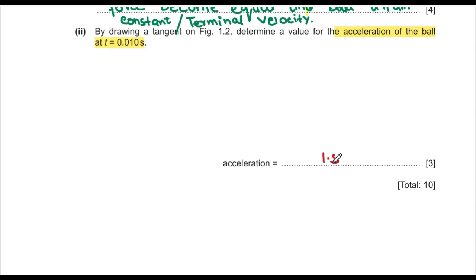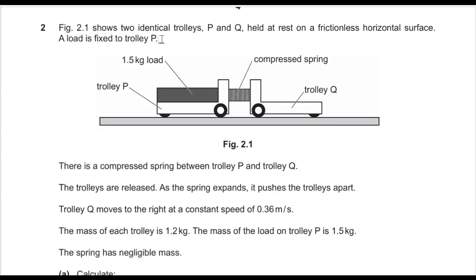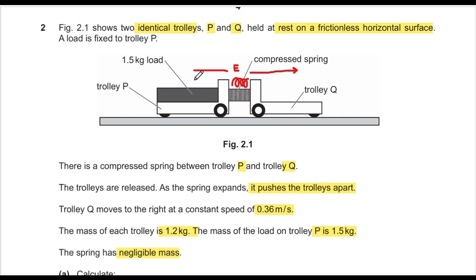Question 2 shows two identical trolleys P and Q held at rest on a frictionless horizontal surface. A load is fixed to trolley P, and there is a compressed spring between P and Q. When released, the spring pushes the trolleys apart. Trolley Q moves to the right with velocity 0.36 m/s. The mass of each trolley is 1.2 kg and the load is 1.5 kg, so the combined mass of trolley P is 2.7 kg. The velocity of trolley P is unknown.